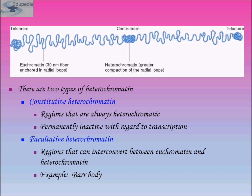This chromatin functions in the transcription of DNA to mRNA products. The gene regulatory proteins including the RNA polymerase complex are able to bind with the DNA sequence due to the unfolded structure of the euchromatin. When these substances are already bound, the transcription process begins. The activity of euchromatin aids in cell survival.